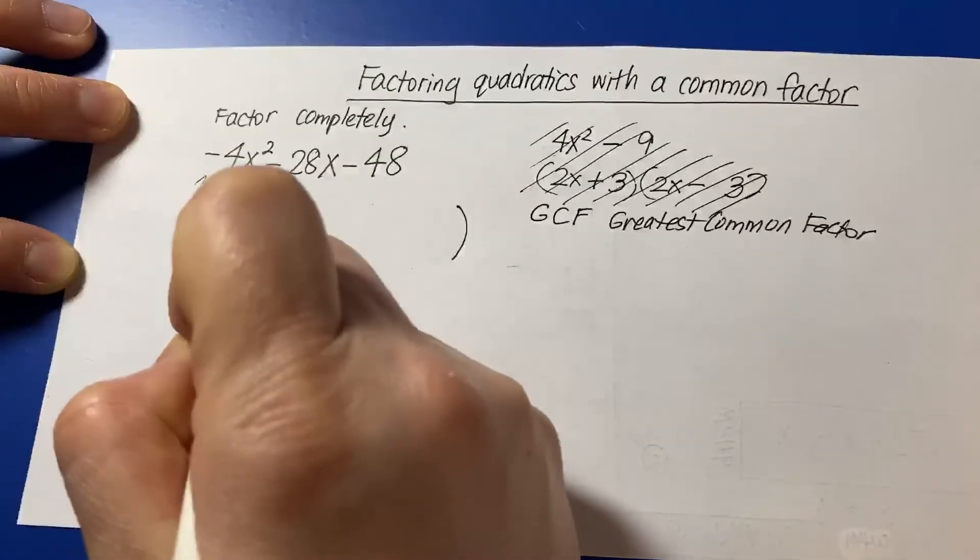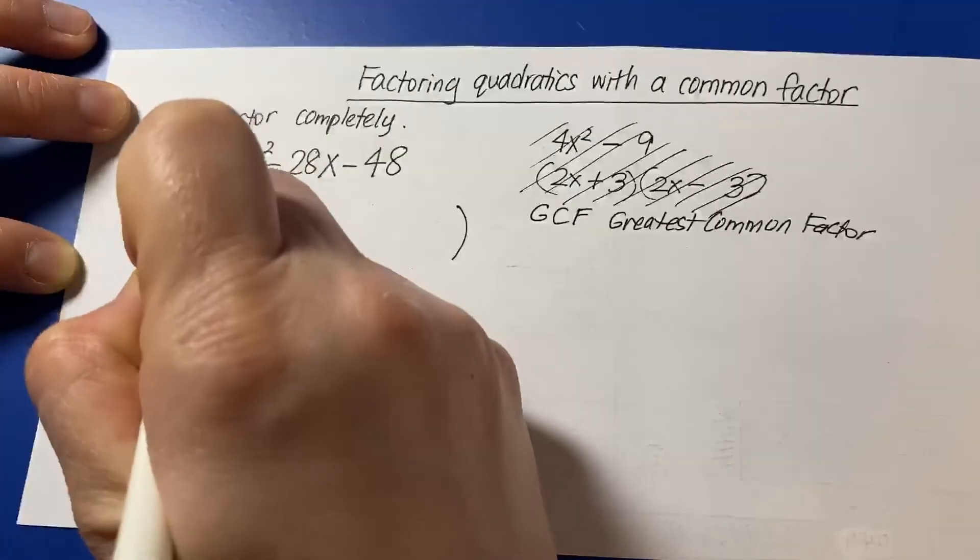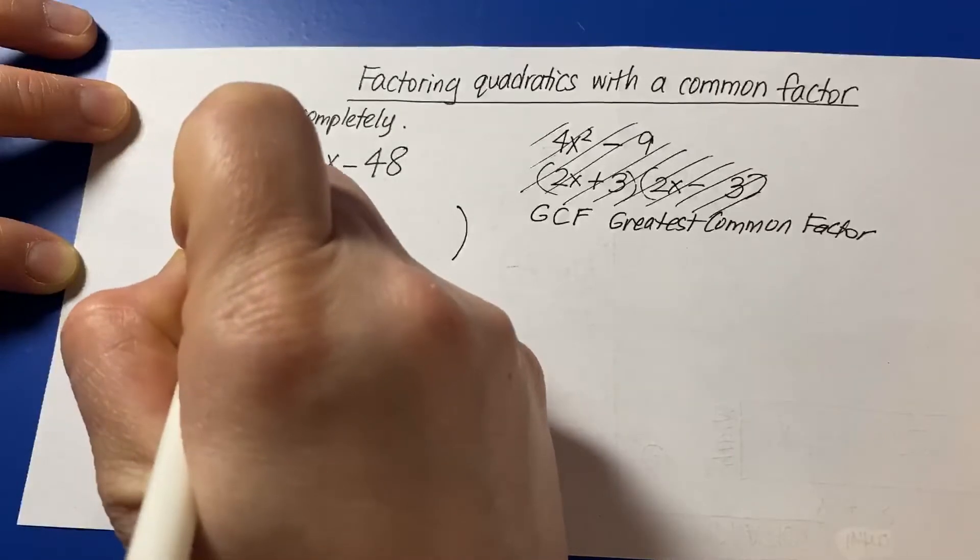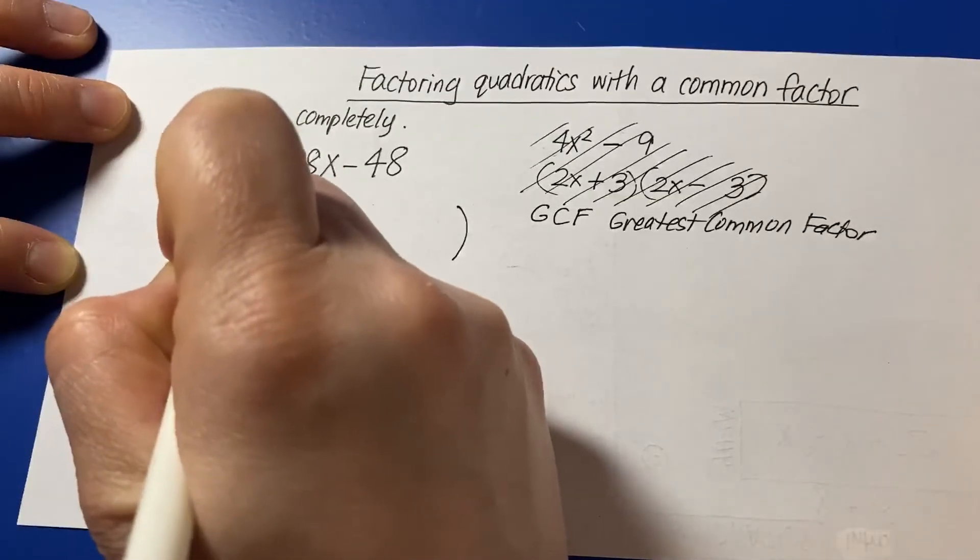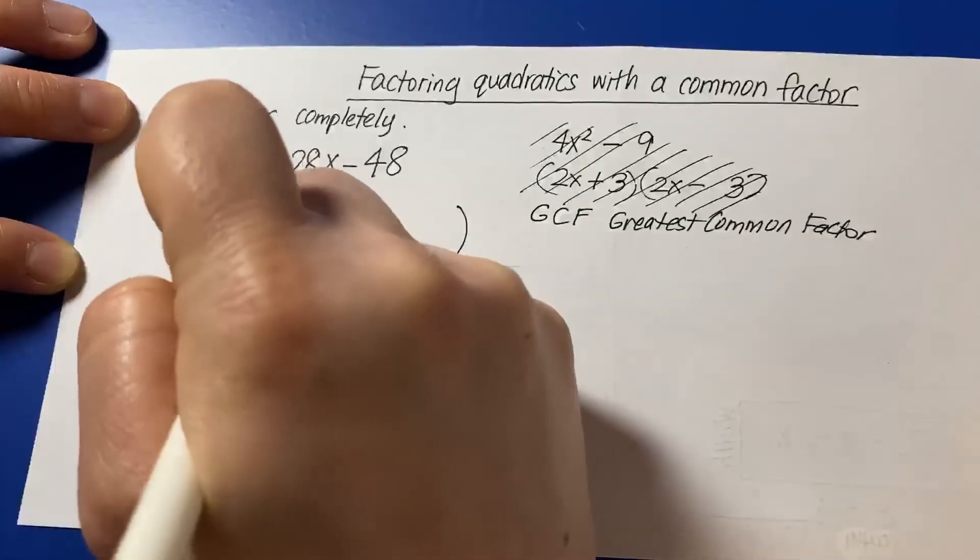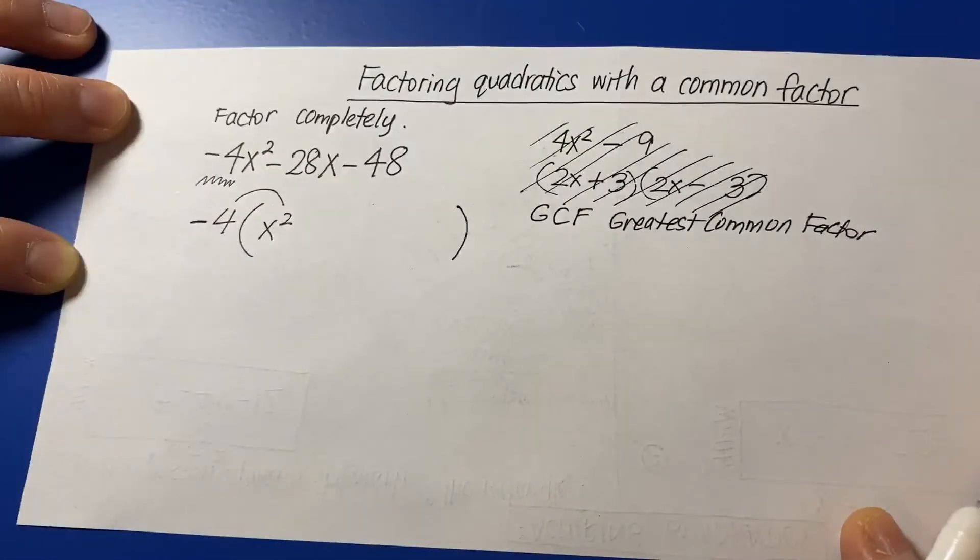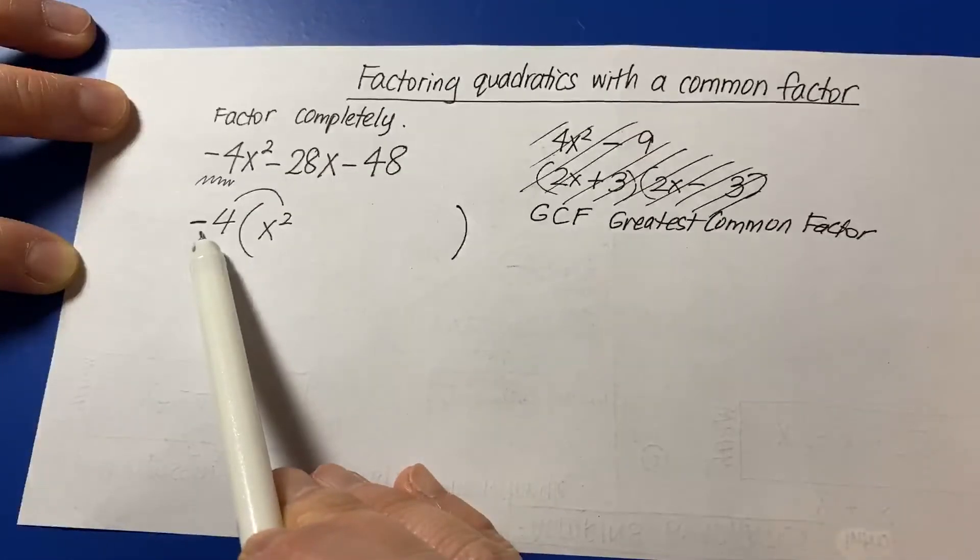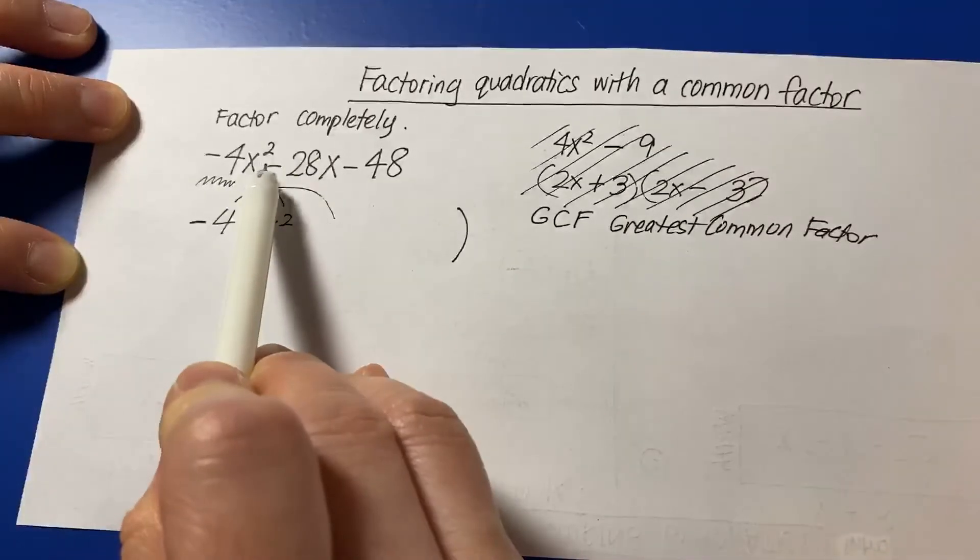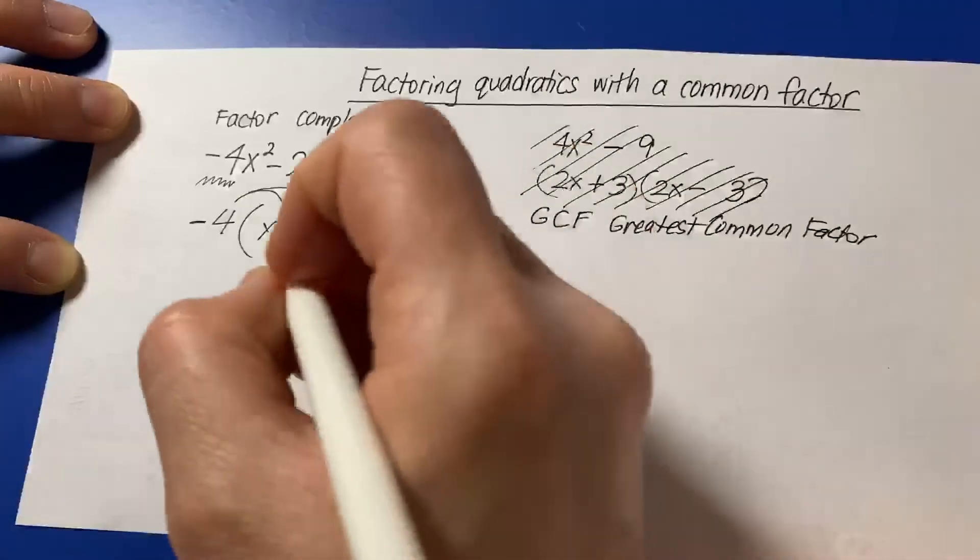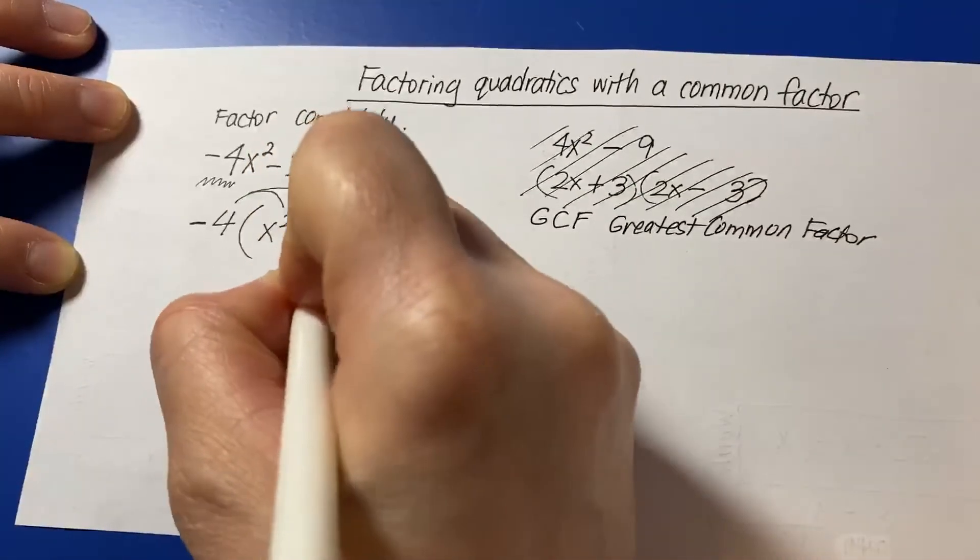Negative 4 times what term gives us negative 4x squared? Well, we already have the negative 4, so the only term we're missing here is x squared. Next part, negative 4 times what term gives us negative 28x? And it is positive 7x.